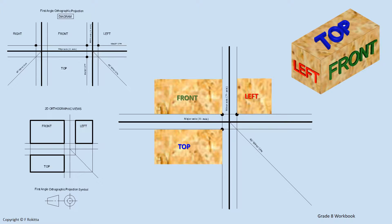We start our explanation by using a basic 3D isometric block as seen at the top right. At the top left of our screen we have the skeleton of the diagram in first angle orthographic projection. This is the complete diagram where we have the front, top, left and right view given to us. The black dots at the corners of the intersections at the margin lines indicate the starting point, also named the anchor point, for each of the views that we are going to draw.